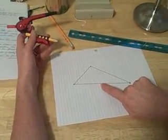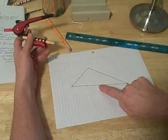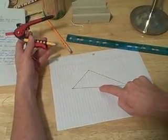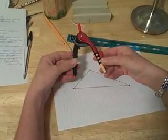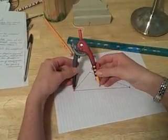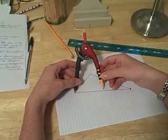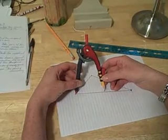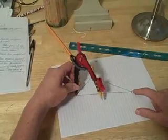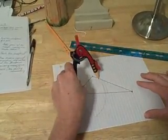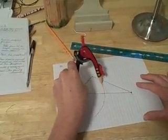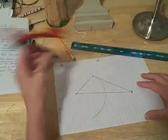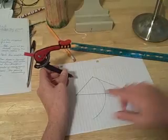The first thing we need to do is find the midpoint. To do that, you take your compass and set the radius to be greater than half of the segment length and create the arc.